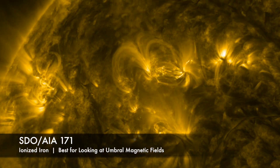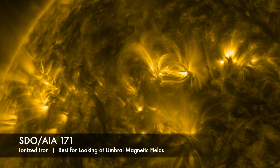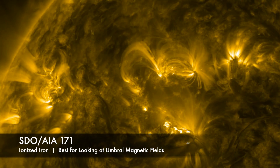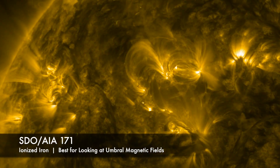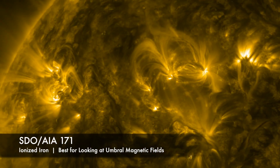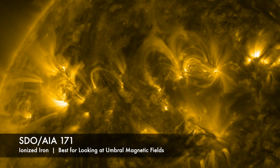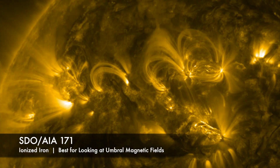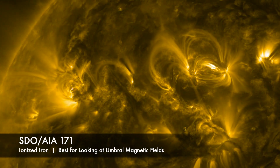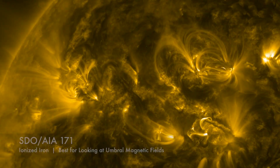This yellow view — 171 angstroms, ionized iron emission — is the best for looking at umbral magnetic fields and arcades in the wake of plasma ejection CMEs.